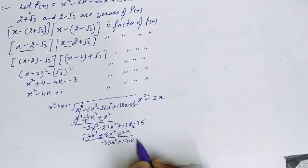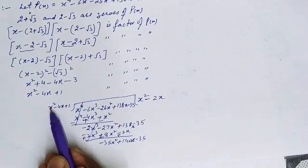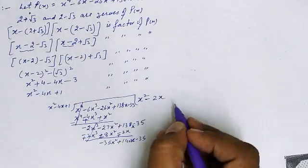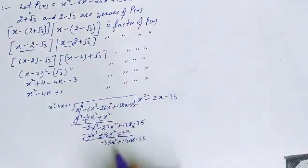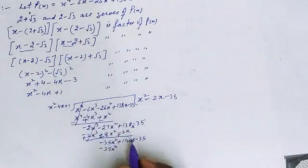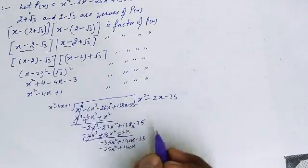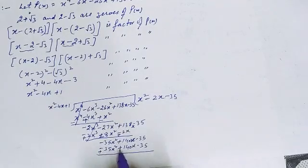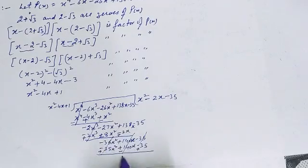Now, to get -35x², multiply x² by -35. So -35 × x² = -35x², -35 × (-4x) = +140x, and -35 × 1 = -35. After changing signs: -35x² cancels, 140x - 140x = 0, and -35 + 35 = 0. All terms cancel and we get remainder 0, confirming x² - 4x + 1 is a factor.